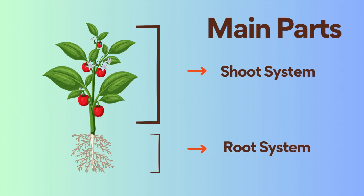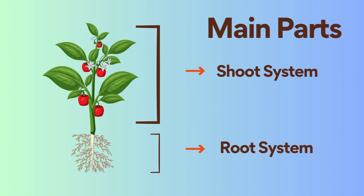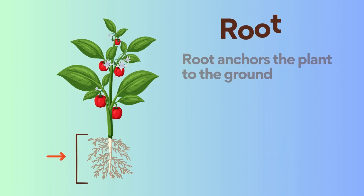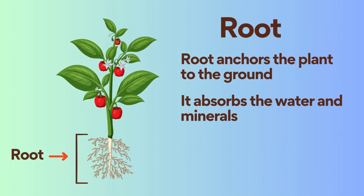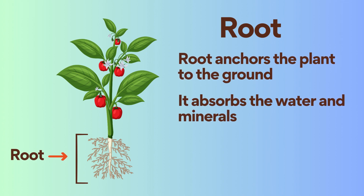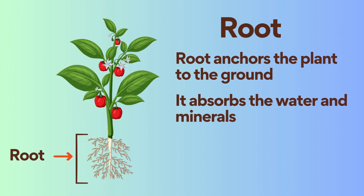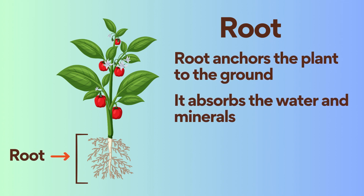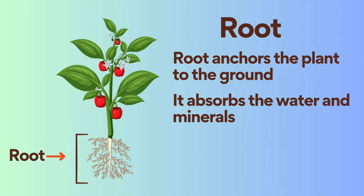The root and shoot are the two main parts of the plant. Root anchors the plant to the ground and absorbs water and minerals.